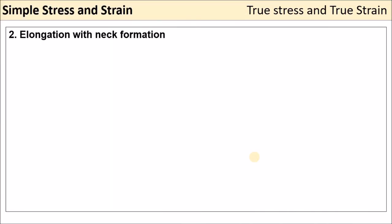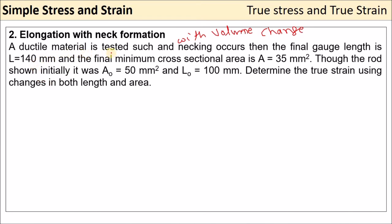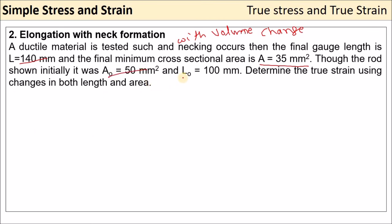Now let's solve another example: elongation with neck formation, meaning with change in volume. A ductile material is tested such that a neck occurs. The final gauge length L = 140 mm, final minimum cross-section area A = 35 mm². Initially, A₀ = 50 mm² and L₀ = 200 mm.